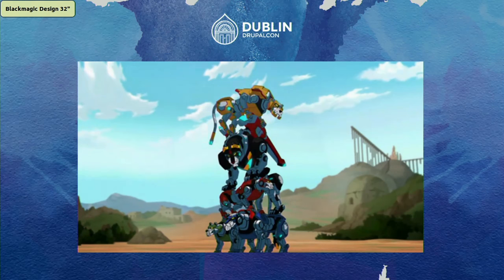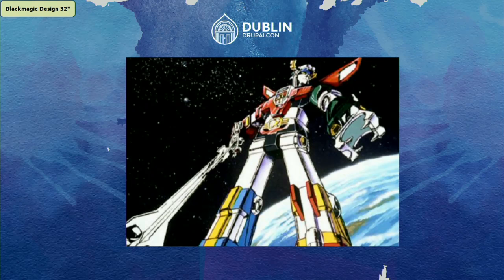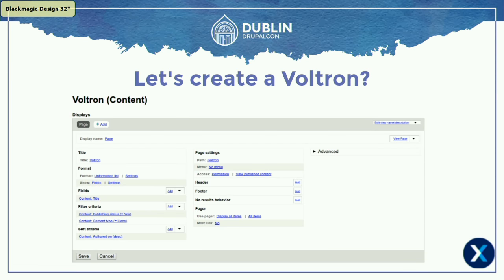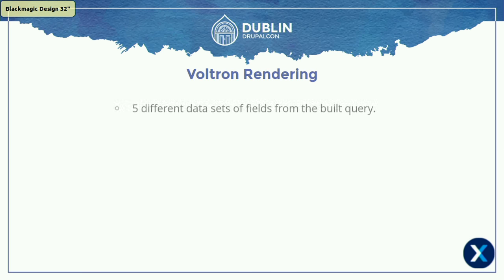But we want something like this. To build it, let's start with the head of the Voltron. If we go into the Views UI, we build a proper query with all the fields, sorting criteria, filter criteria, and relationships we want. We fetch the data from the database and get five different sets of fields. Each dataset represents a row or an entity which we are getting. So now we are going to render this Voltron step by step.